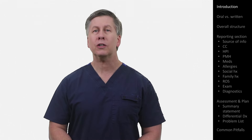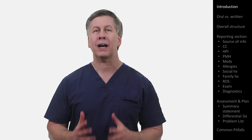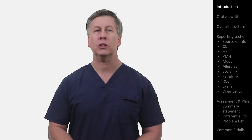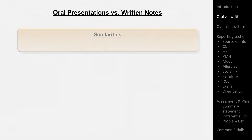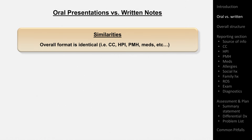Let's take a look at some of the most general similarities and differences between the H&P's oral and written forms. First, the similarities. The overall format, including specific sections and their order, is the same. So both have a chief complaint, history of present illness, past medical history, and so on.